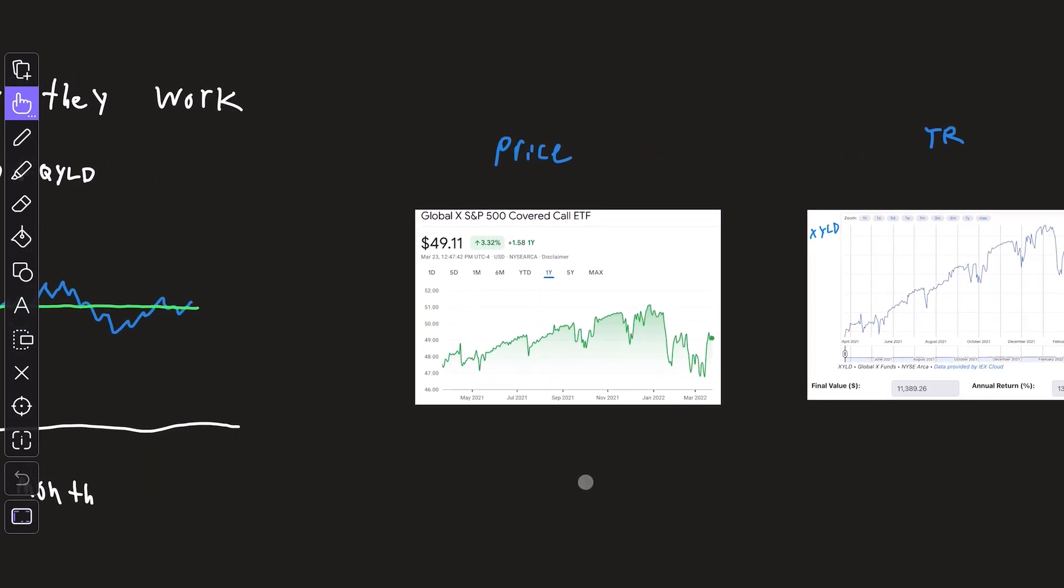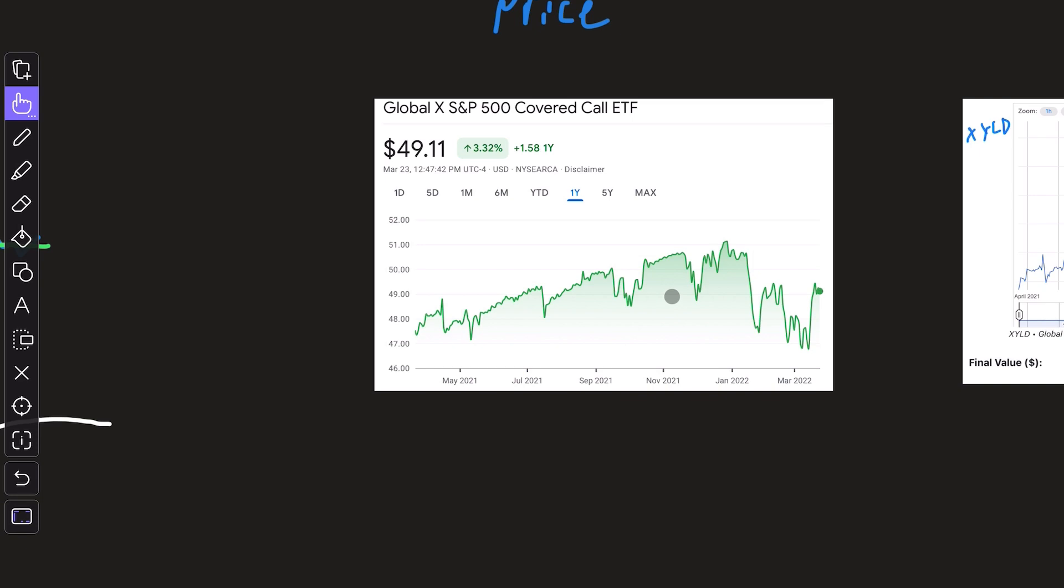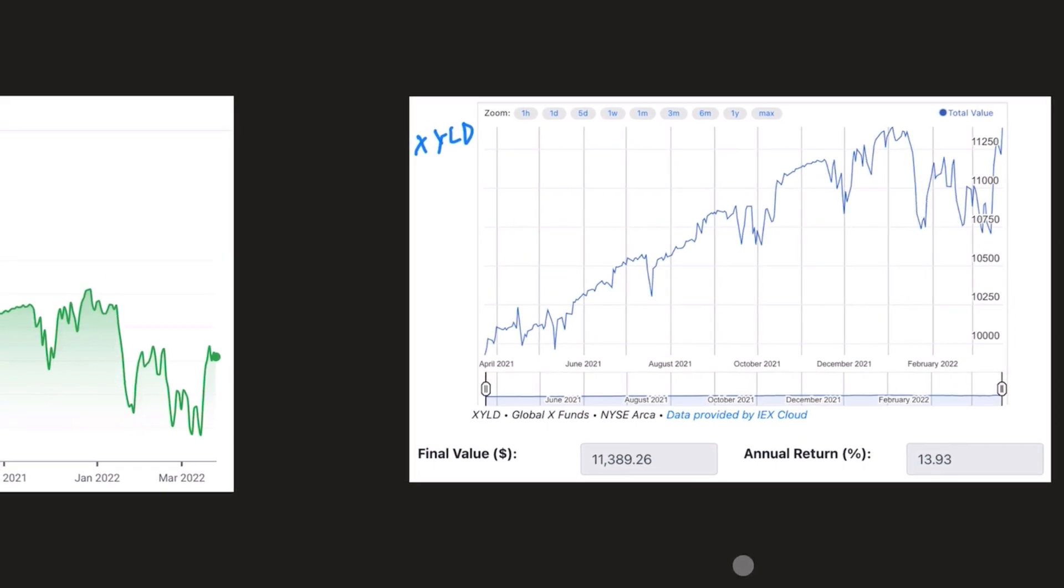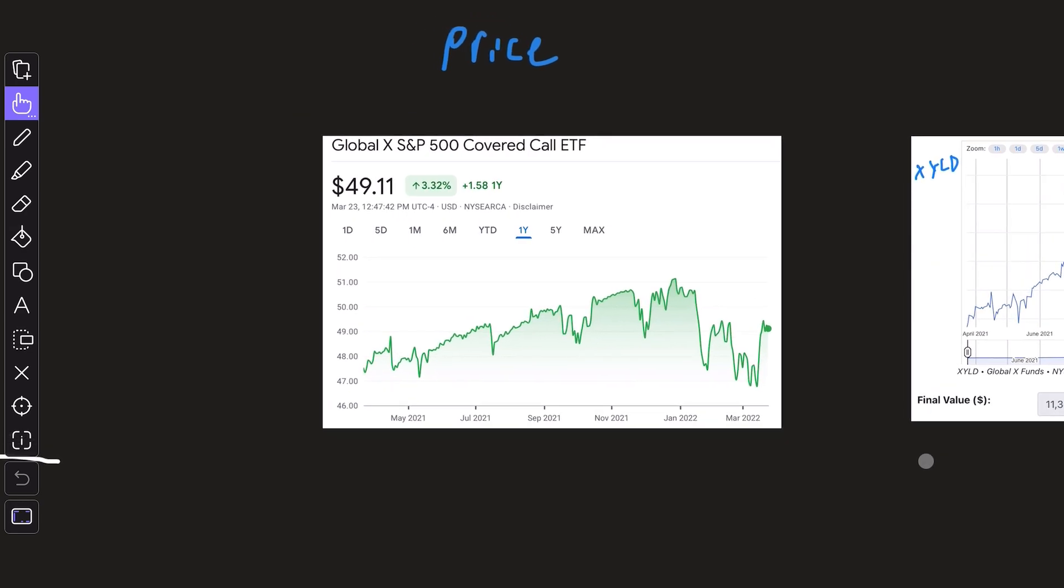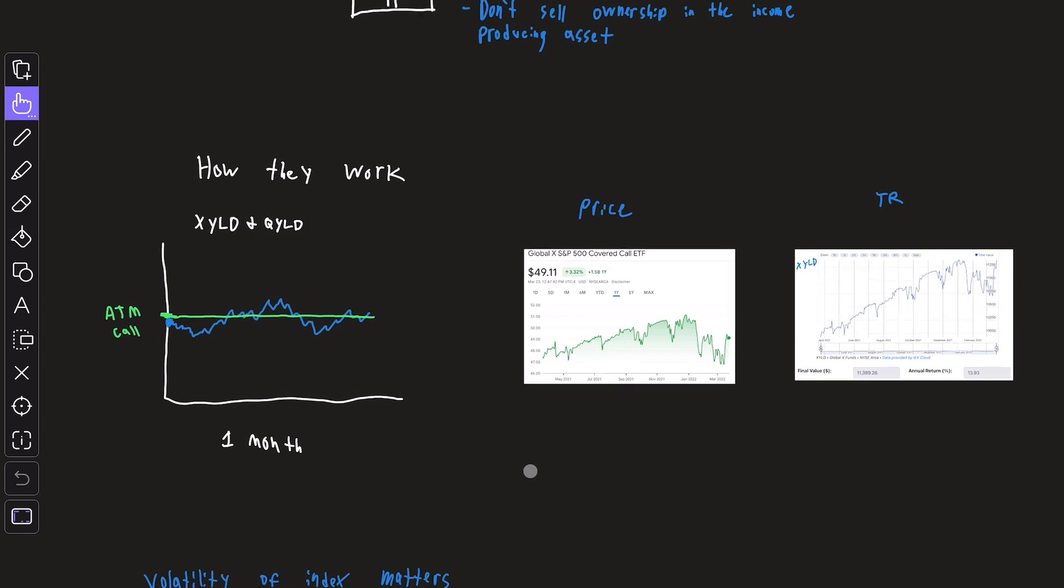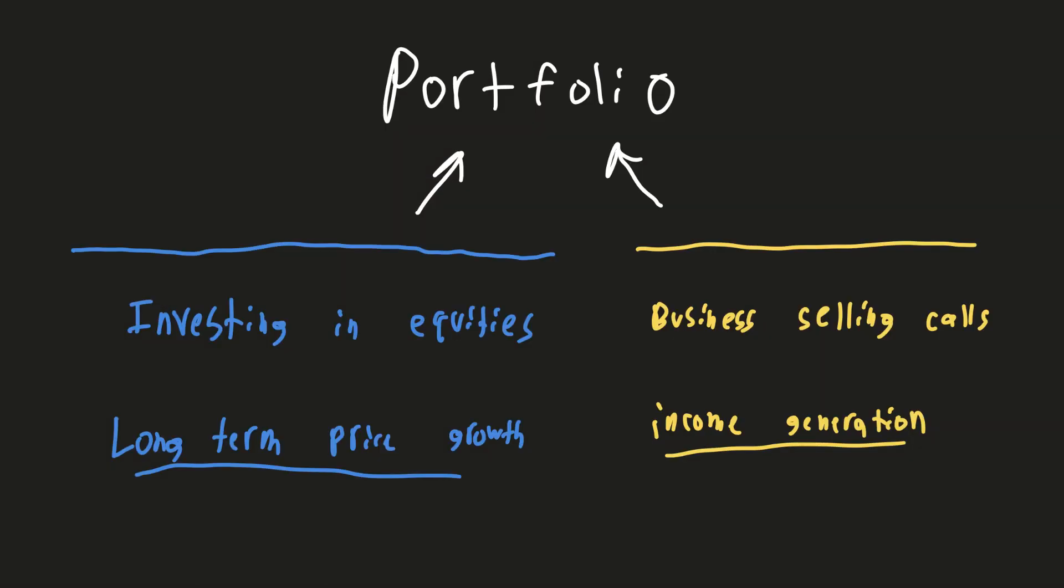And to prove this, if you look at the price history of XYLD over the past one year, it does have some price appreciation—3.32%. But if you take a look at the total return over that same time period, it's almost 14%. So all of that difference is the premium collected by selling call options. In fact, a helpful way to think about these ETFs is not as investing in the actual underlying index. Rather, it's a side business selling insurance on stocks.